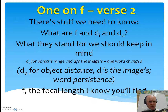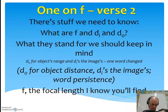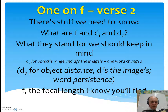There's stuff we need to know — what are F and Die and Doe, what they stand for we should keep in mind. Doe for object distance, Die is the image's word persistence, if the focal length I know you'll find.